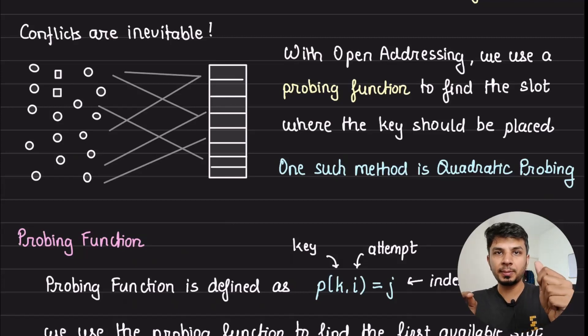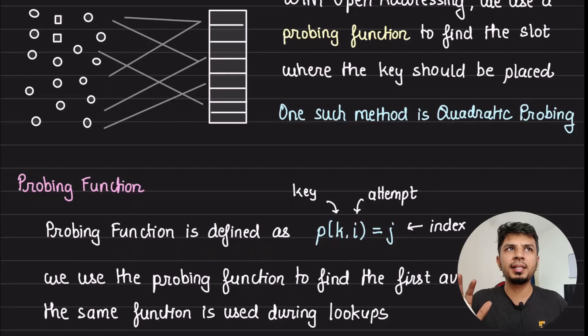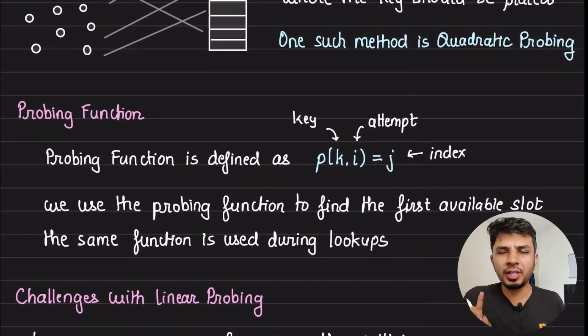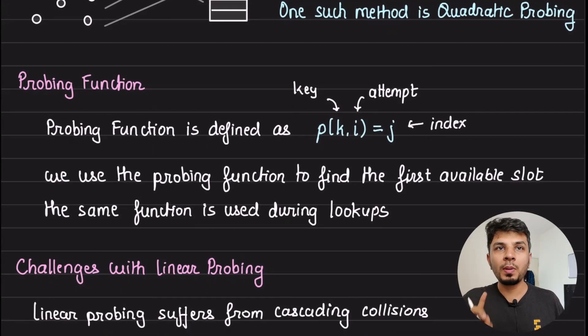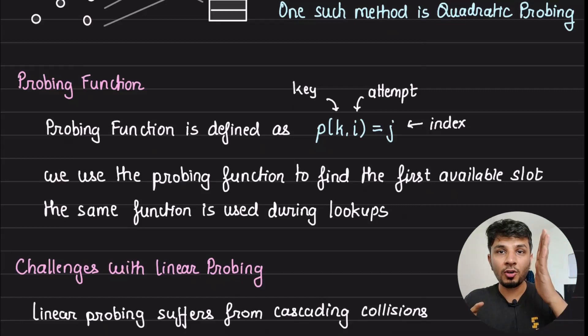In the previous video, we looked at linear probing to do it where we literally found a primary slot and if that is occupied, we went linearly moving forward in the right direction until we find an empty slot. Now in this video, we will talk about quadratic probing. Quadratic probing is an alternative to linear probing and what it basically does is instead of using a linear function, it uses a quadratic function. So first, what is a probing function? Probing function takes the key that you would want to place in the hash table and an attempt. So with zeroth attempt, it should give you the primary slot.